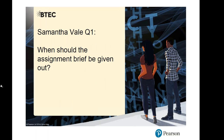Samantha Vale's first question: when should an assignment brief be given out? An assignment brief for Components 1 and 2 should be given to students when they are sufficiently prepared to meet the demands of the assessment tasks — meaning students should have time to explore, experiment, and fail before the assessment begins. For example, if you have 36 hours for Component 1, you could split the time in half: 18 hours for pre-assessment exploration and experimentation, and 18 hours for the actual assessment tasks.